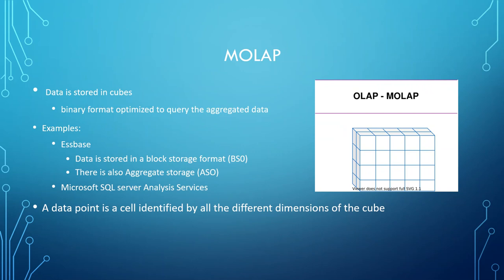MOLAP is more of what Oracle EPM comes under. In this system, data is stored in cubes in a binary format, optimized to query and aggregate the data. The different dimensions — the account dimension and the entity dimension — would be your dense dimensions, and they pull out a block sized to account for every single possible value. Based on the dimensions you put in, the block pulls out only the values that come underneath those dimensions, and each cell contains the data you need. Examples include Essbase stored in Block Storage (BSO) and Aggregate Storage (ASO), where all the data is stored in the level zero component of the block.